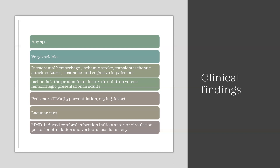Patients with the ischemic type can present with TIAs just by hyperventilating, crying, or having fever. If you extrapolate this to the anesthesia setting, a patient having pain or temperature changes could potentially cause TIAs — that's why having a very detailed plan to treat these patients is so important. The appearance of lacunar strokes is rare and usually associated with good prognosis.